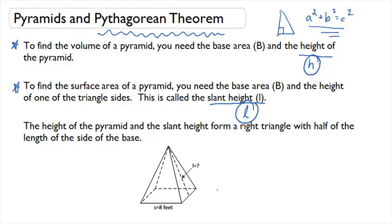In a pyramid, we actually form a right triangle. If you take a look here, I'm going to draw a right triangle that is formed in a pyramid and then redraw it outside the pyramid.